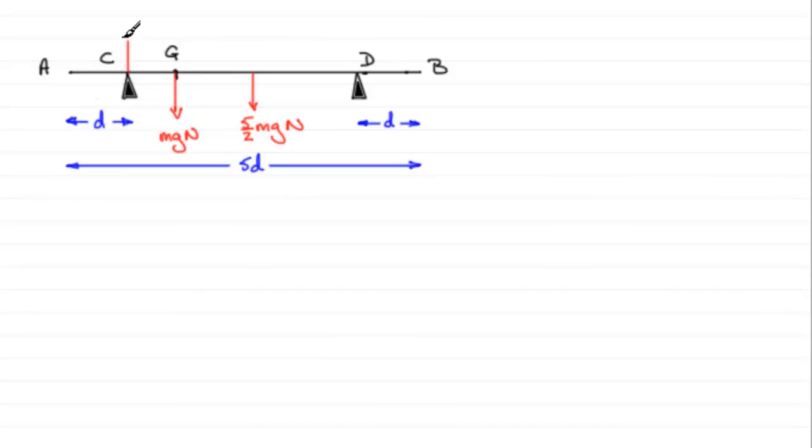So there's going to be a contact force at C which won't be zero. So we'll just put as RC newtons there. There'll also be one at D, RD newtons. This will have changed now compared to what it was in the first part.